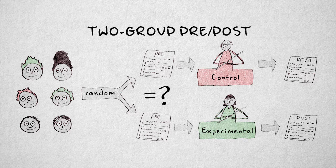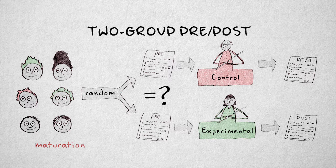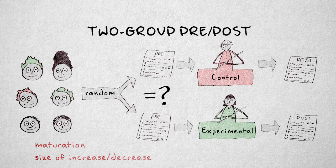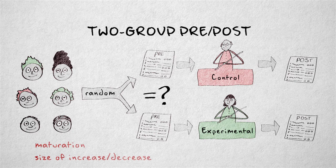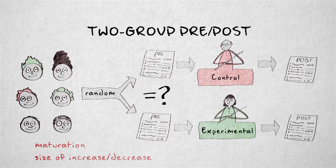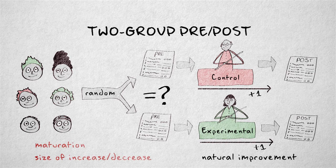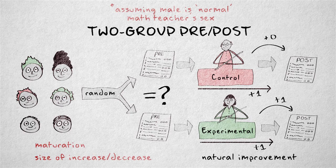This is an especially good idea when maturation forms a plausible threat to internal validity. A pretest also allows the researcher to compare the size of the increase or decrease in scores in the experimental and control condition. For example, we can assess how much the boys' math performance increased due to natural improvement, and what the additional effect of teacher sex was.